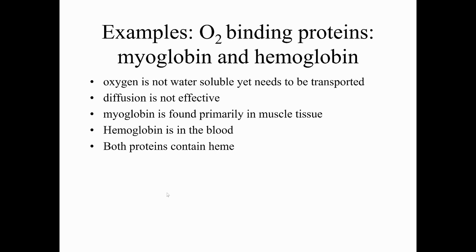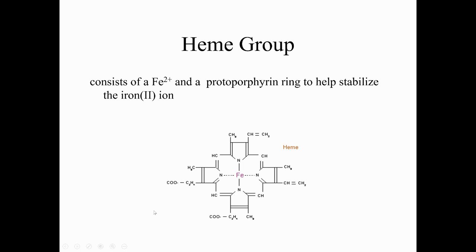Our first example is myoglobin, and then we'll expand to hemoglobin. Both are oxygen-binding proteins. Oxygen needs a protein carrier because if we had to wait for it to diffuse through the bloodstream, that would not effectively get oxygen to our muscles, brain, and other organs. Also, oxygen is not water-soluble — it's nonpolar — and blood is polar with a lot of water. Myoglobin is found primarily in muscle tissue; hemoglobin is found in the blood.